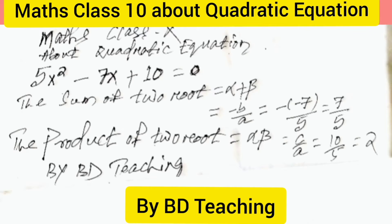α + β = -b/a = -(-7)/5 = 7/5. Similarly, the product of two roots, that means α × β = c/a = 10/5 = 2. In this way, we can determine the sum of roots and product of roots.